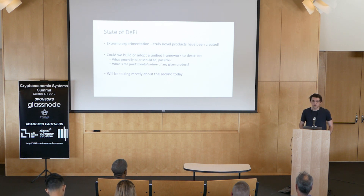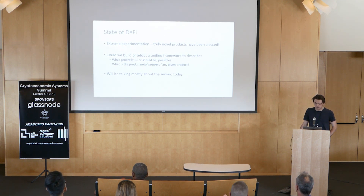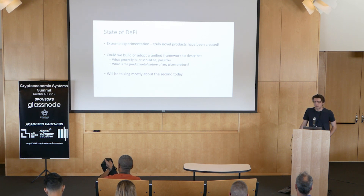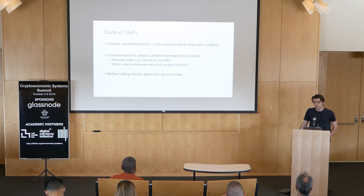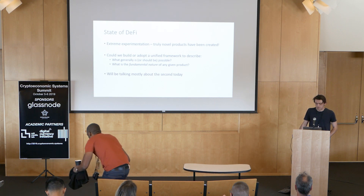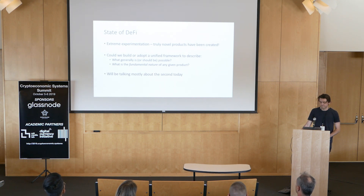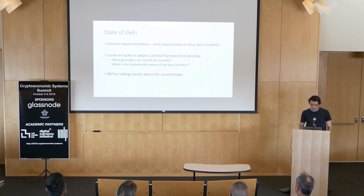So the current state of DeFi — can I just get a quick show of hands how many people have heard the word DeFi before? All right, perfect. Tons of products have been created. Every hackathon we see like 100 new forms of Dai. But it's not really clear what should actually be possible to create, and of what is possible to create, what the fundamental nature of any of these products are. It's sort of unclear to most people in the industry what a Maker CDP actually is, what Dai actually is, what a Uniswap LP share actually is, what a position in a Compound money market actually is. These are not well-characterized products, and that makes it very difficult to talk about them, especially for those building second-order products on top of them.